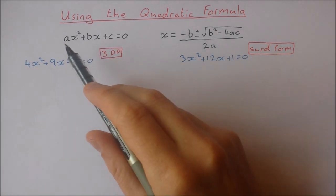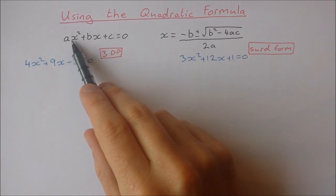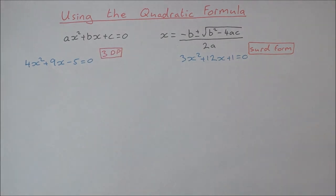And a, b and c we get from our quadratic equation when we have it in this order: a is the coefficient of x squared, b is the coefficient of x and c is the constant.